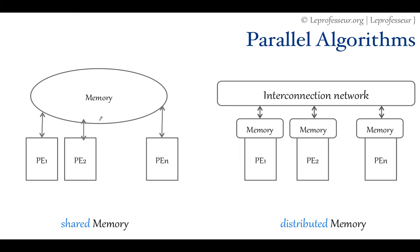In shared memory, each processing element shares the same memory. In distributed memory configuration, each processing element has its own private memory. This is how we can broadly classify it.